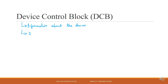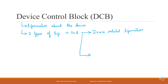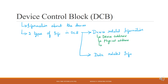There are two types of information in the DCB. The first one is device-related information. Device-related information includes the device address, physical address of the device, device status information, and type of the device.